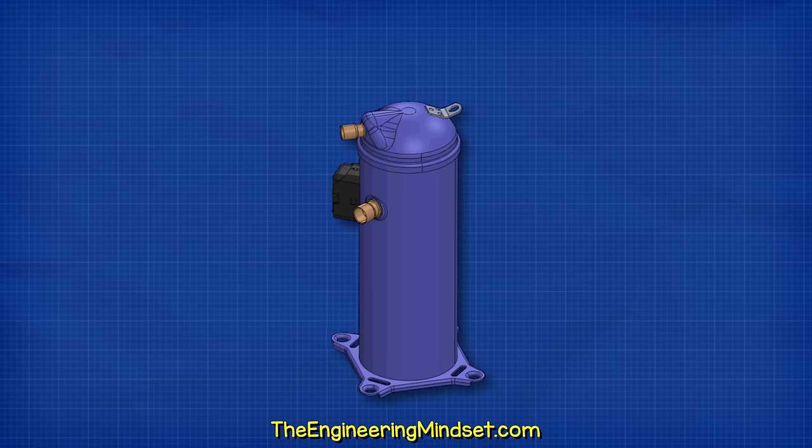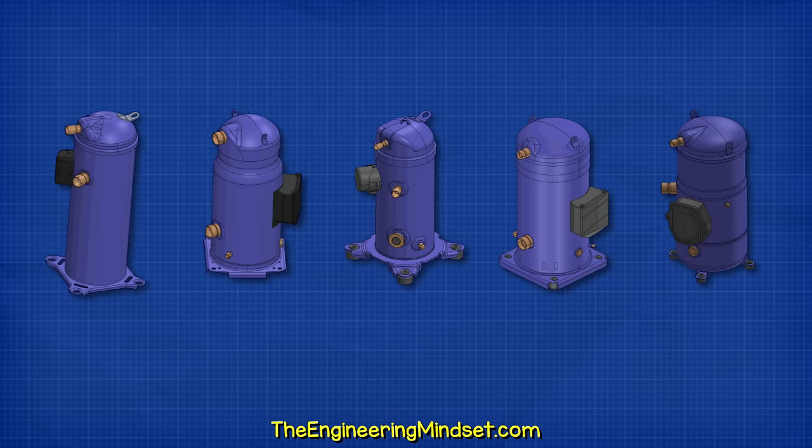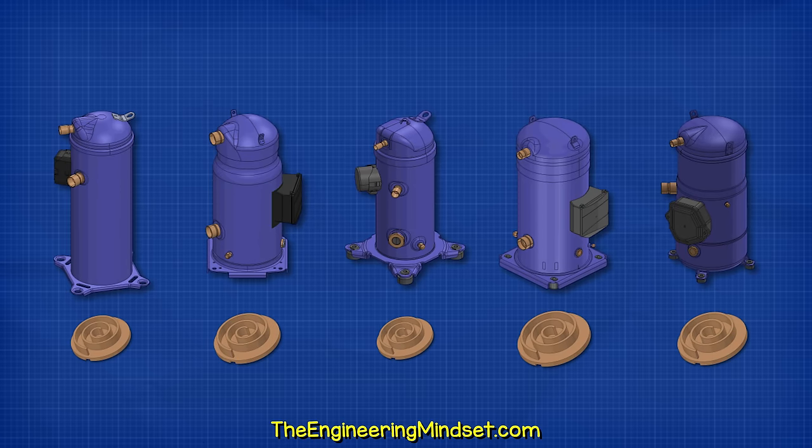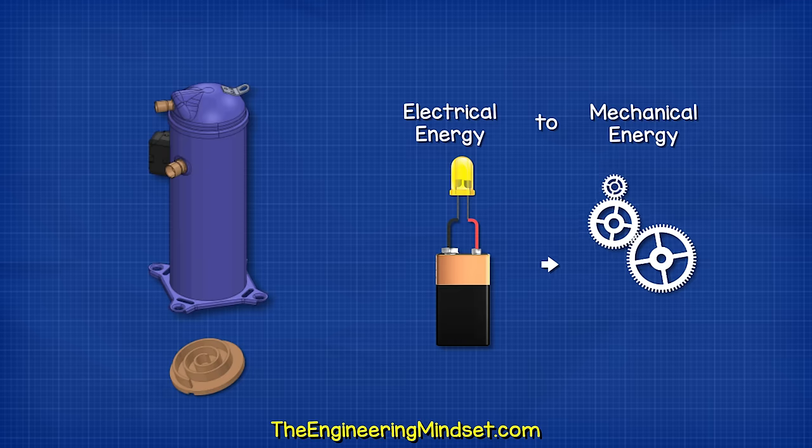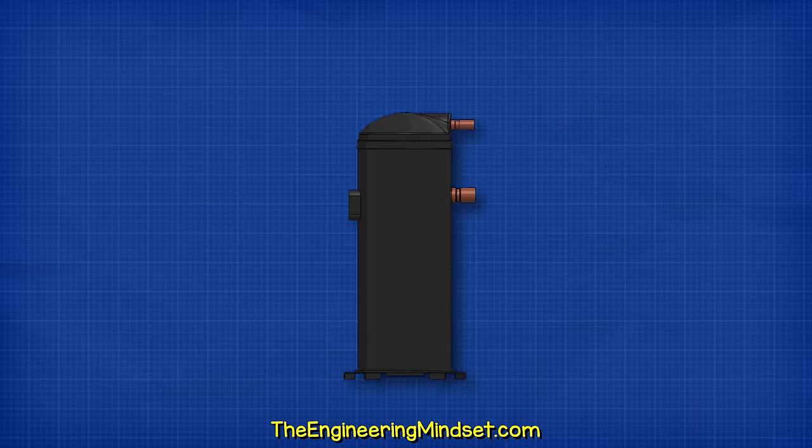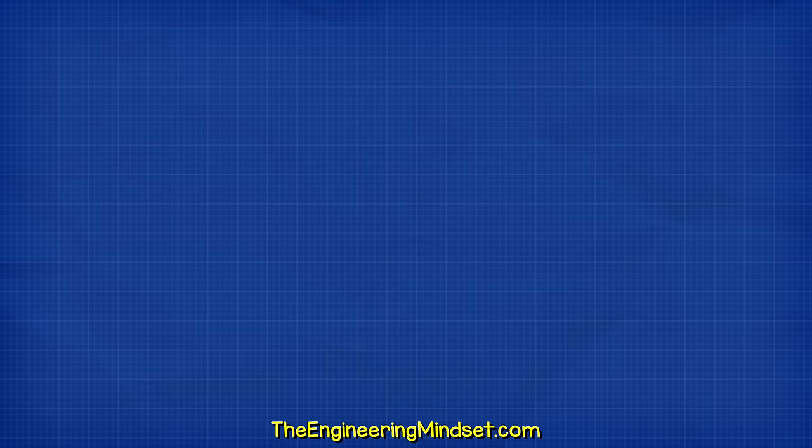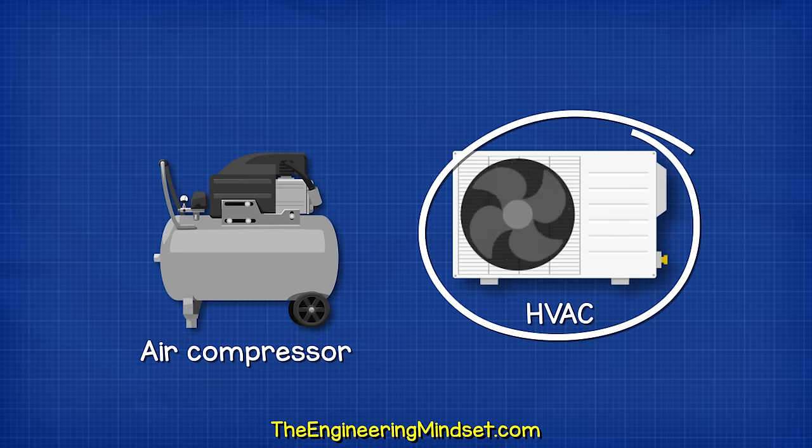Sponsored by Danfoss. Scroll compressors look something like this. They come in many shapes and sizes depending on their capacity and also the technology used inside them. They basically convert electrical energy into mechanical energy.